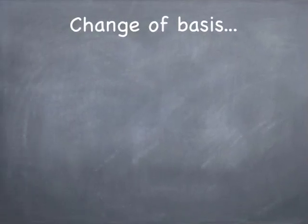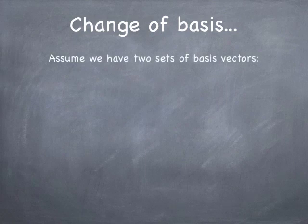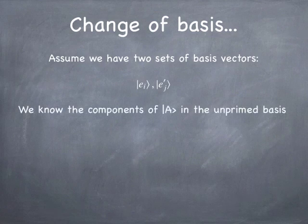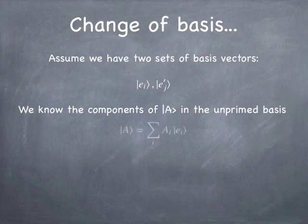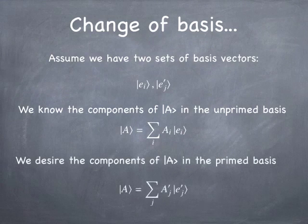Our first example is the idea of a change of basis. Let's say we have two sets of basis vectors, the unprimed and the primed, and we're interested in finding the components of A in the prime basis, assuming we know the components of A in the unprimed basis. So we know the A sub i's. We don't know the A prime sub j's, so we want to know what are the coefficients, what are the components of a ket in the prime basis, given that we know the basis vectors in both bases, and we know the components of the ket in one of the two bases.